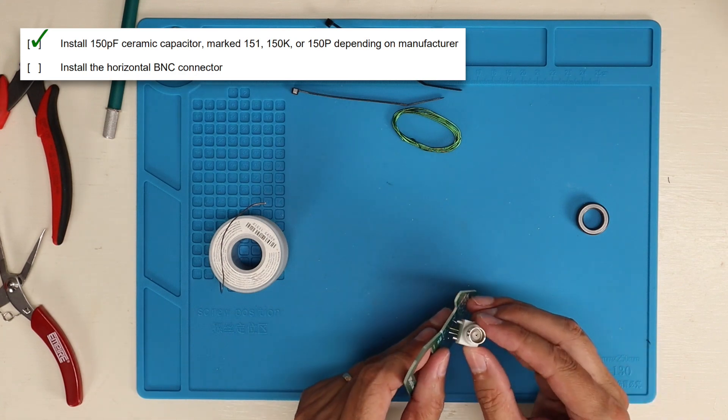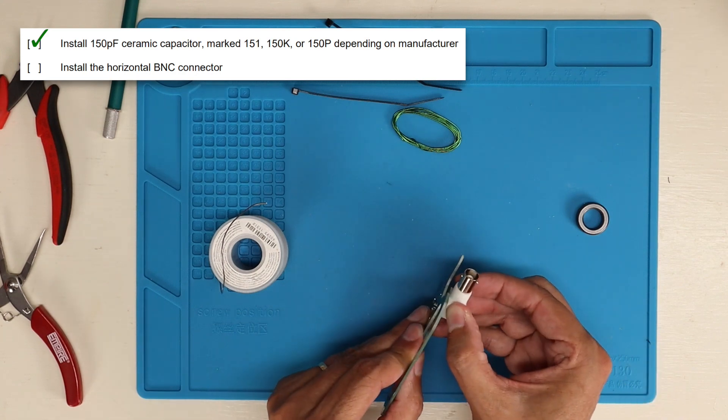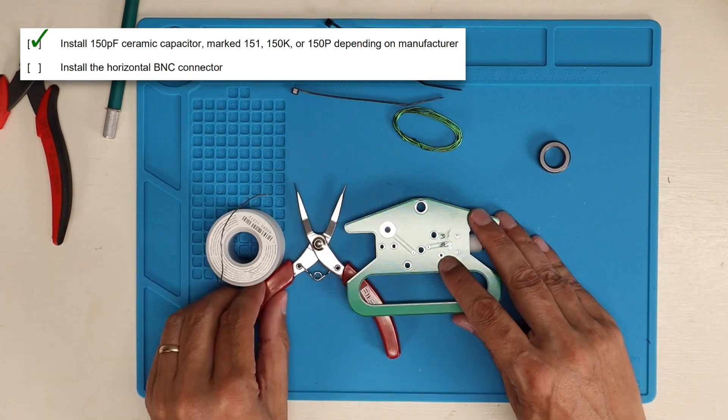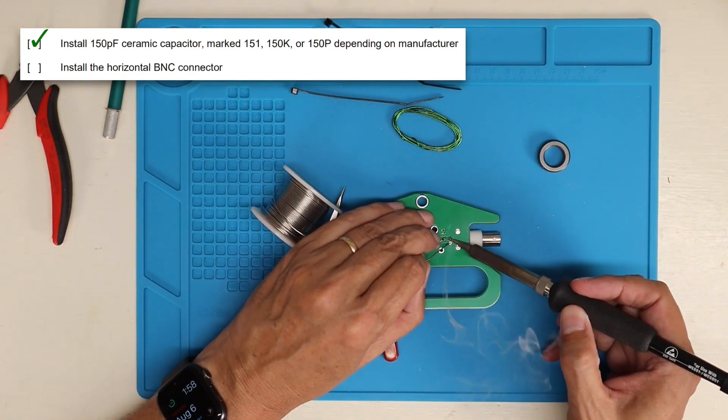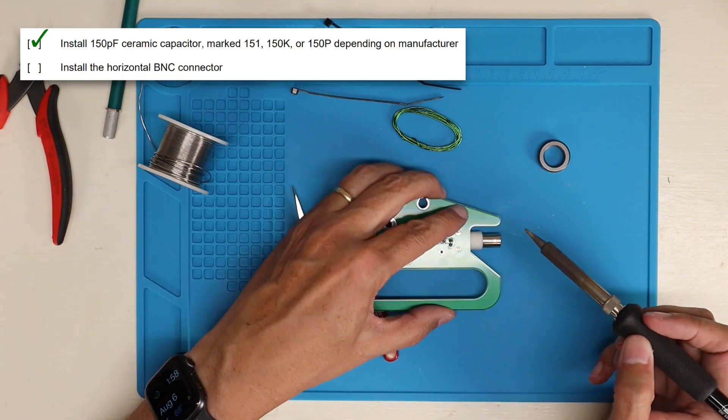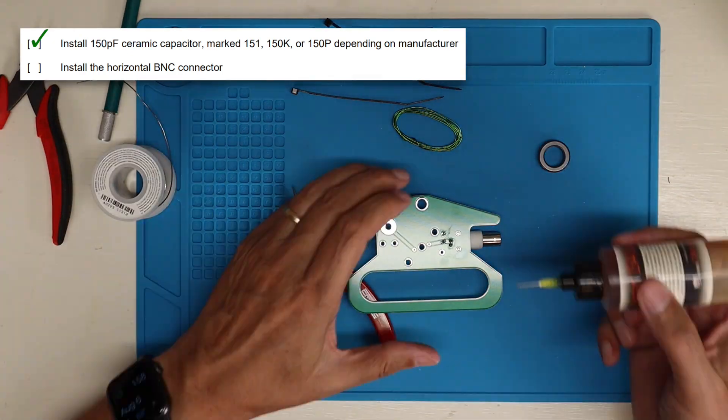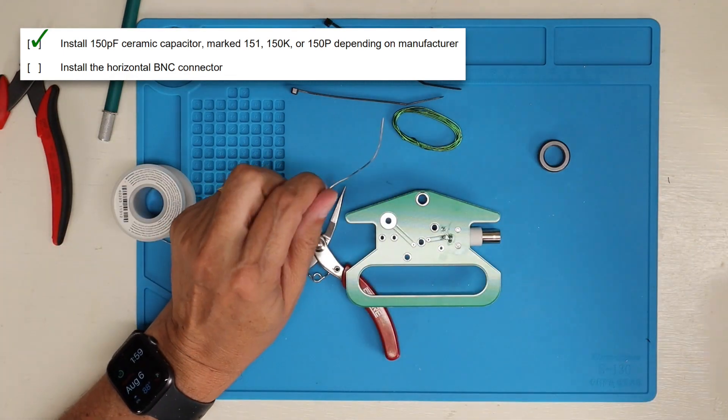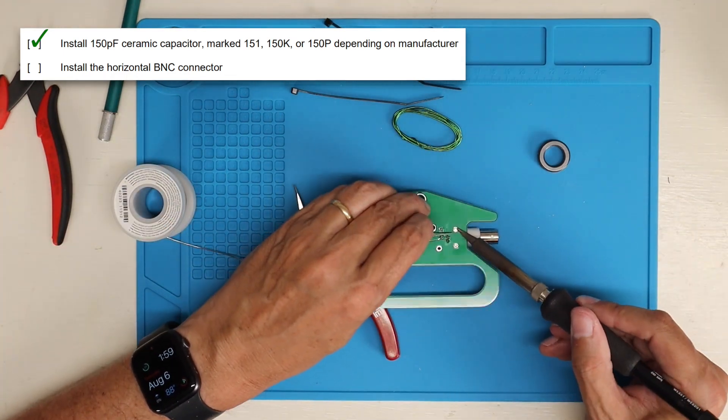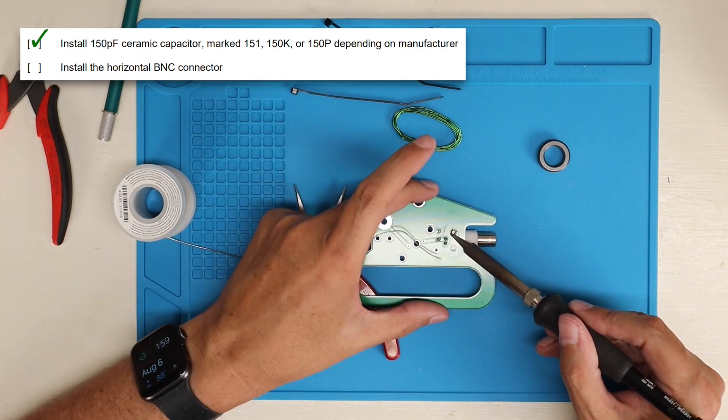Next we'll solder on the BNC connector. I solder the two little pins in the back first. That way you can make sure that it's flush down to the board before soldering the two larger pins. Once you solder those larger pins it will be really hard to try and get that flattened down to the board. I also put a little flux on there just to get a good solder connection.